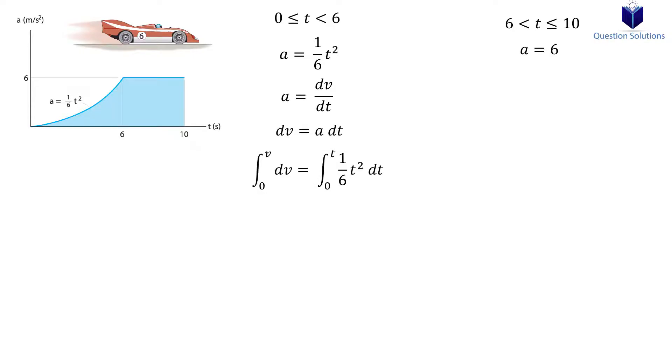Since the car starts from rest at a time of 0, those will be our lower bounds for our integral. Solving gives us our velocity equation. Let's figure out the velocity of the car at 6 seconds. Substituting 6 seconds into our equation gives us 12 meters per second. We will use this velocity and a time of 6 seconds to figure out the equation for the next segment.